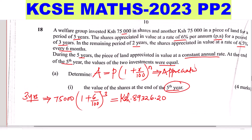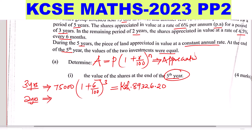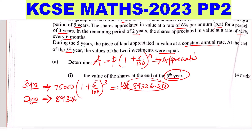We are done with the first three years, but we need to continue to the fifth year — two years remaining. In the remaining two years, the shares appreciated at the rate of 4.5% for every six months. As we begin these two years, the principal is no longer 75,000; there has been appreciation, so the new principal is 89,326.20.